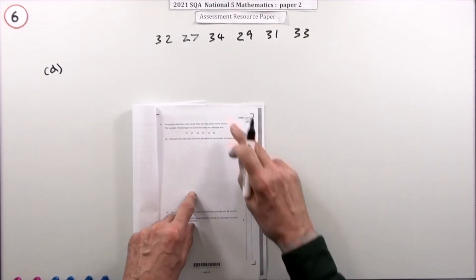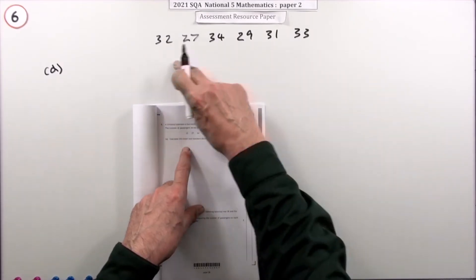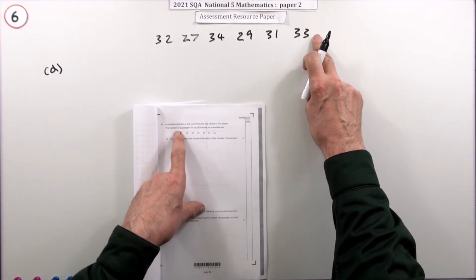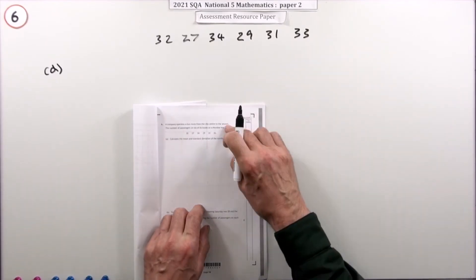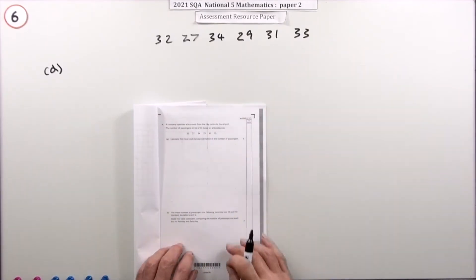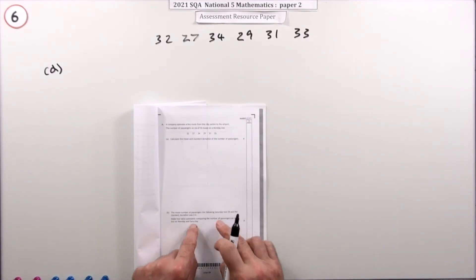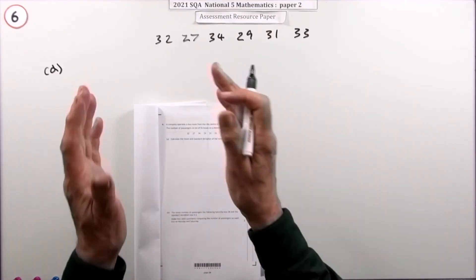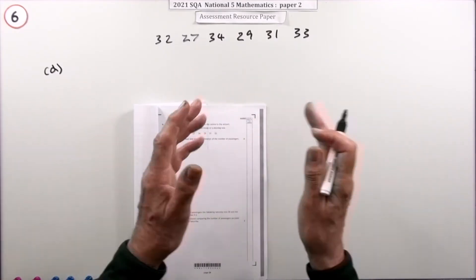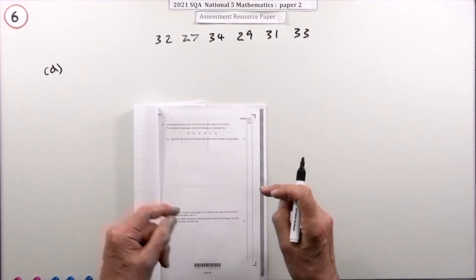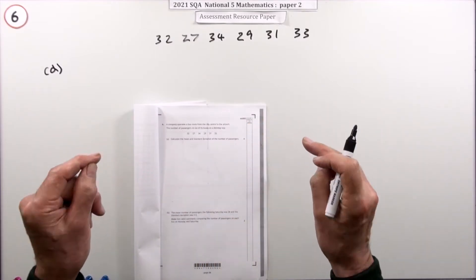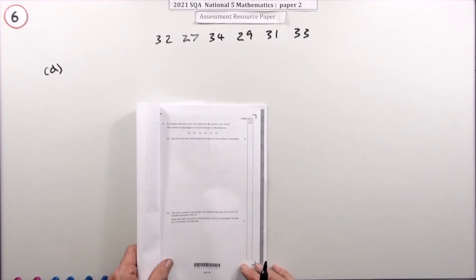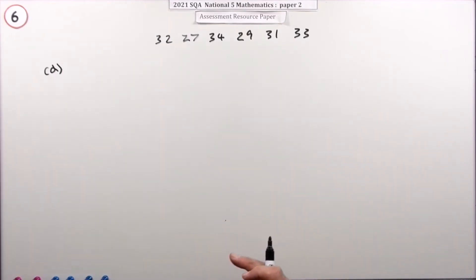It's a standard question: work out the mean and standard deviation of this set of numbers representing the number of bus passengers on a certain Monday. The second part asks you to compare it to some other time, so you're comparing the mean and the standard deviation. The critical thing is showing you understand what they actually mean - worth four marks.